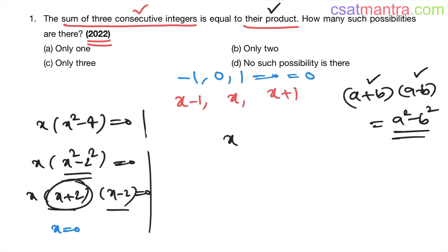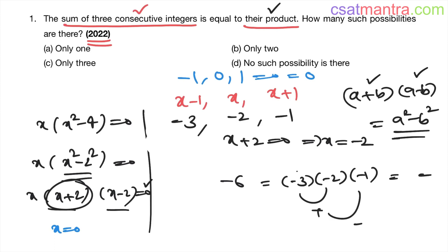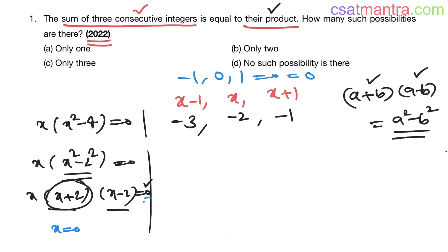When x+2 = 0, x = -2. So the integers are -3, -2, -1. Their sum is -6. The product is (-3)×(-2)×(-1): minus times minus is plus, times minus gives minus, so (-3)×(-2)×(-1) = -6. Sum equals product — this is another valid possibility.